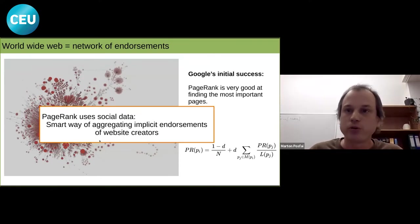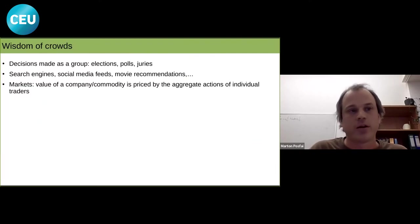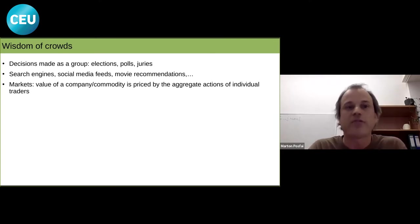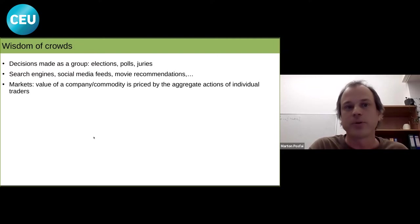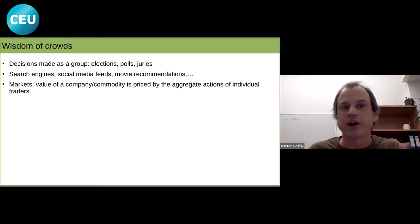What put Google over the top is finding a smart way to aggregate the implicit endorsements of website creators — aggregating social data in a way that highlights good collective judgment. In society there are many cases where we rely on collective judgment: elections, polls, juries — where we explicitly ask groups for opinions — but also search engines, social media feeds, and movie recommendations, all of which depend on social data being aggregated by the services that provide them.